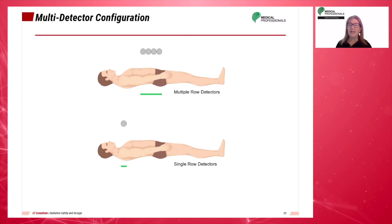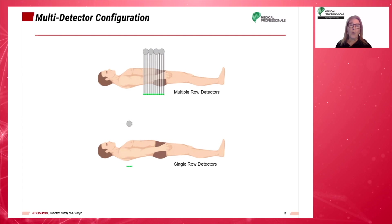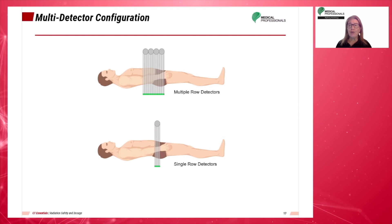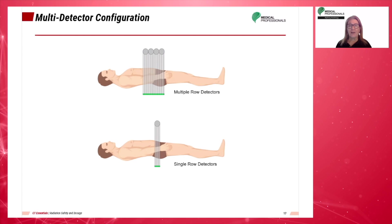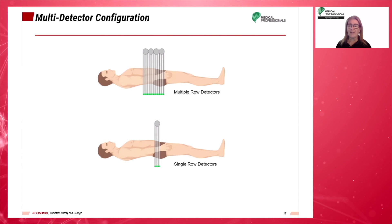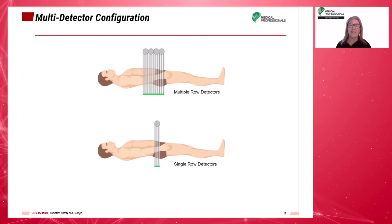One major problem with a single-slice, single-row detector is the length of time needed to acquire data. Multi-detector CT, or MDCT, is a form of computed tomography for diagnostic imaging in which a two-dimensional array of detector elements replaces the linear array used in conventional and helical CT scanners. This two-dimensional detector array permits CT scanners to acquire multiple slices simultaneously, greatly increasing the speed of CT image acquisition.